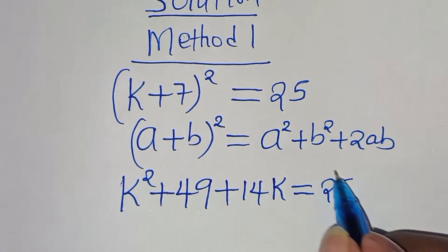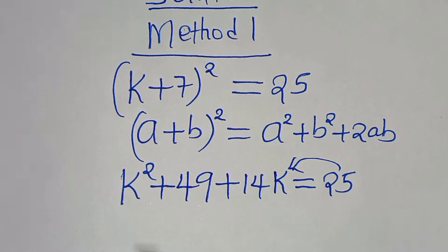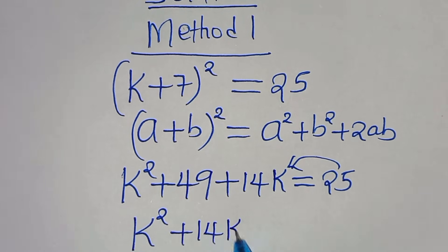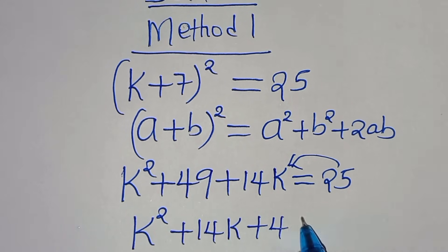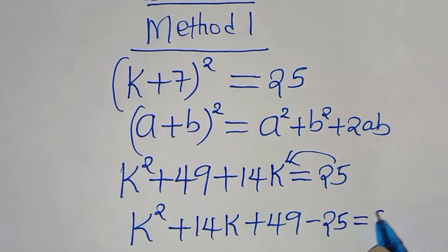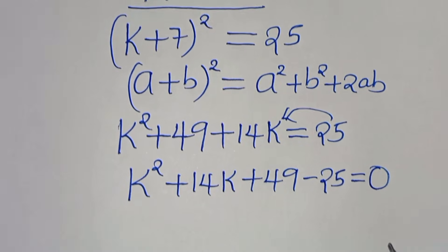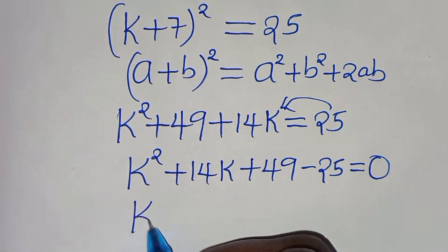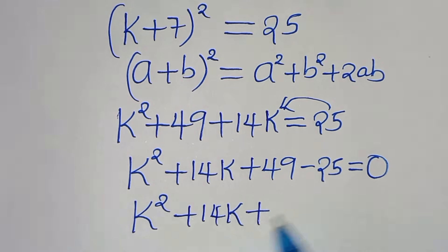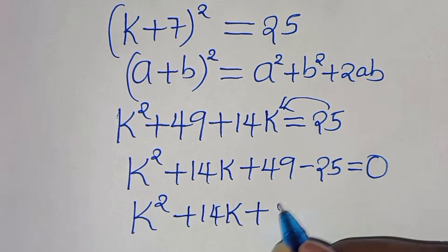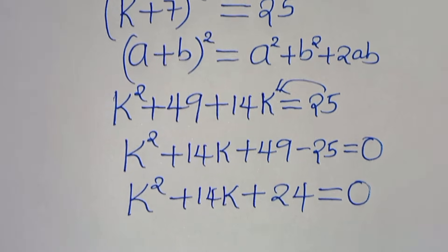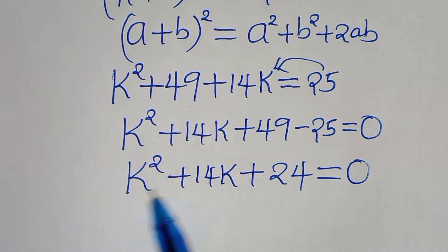Now let's take 25 on the left hand side, so we have k² plus 14k plus 49 subtract 25, this is equal to zero. So now this is k² plus 14k plus 24 equals zero. Now this is a quadratic equation.